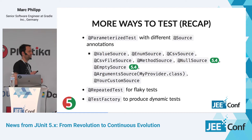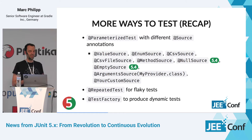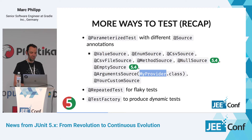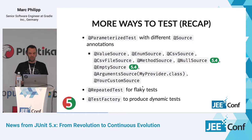To recap: parameterized tests support different source annotations — we saw @CsvSource, there's also @CsvFileSource, and @MethodSource which delegates to a static method in a test class or another class. It's extensible — you can implement your own ArgumentsProvider or even your own annotation. There are @RepeatedTest for flaky tests and @TestFactory to produce dynamic tests.